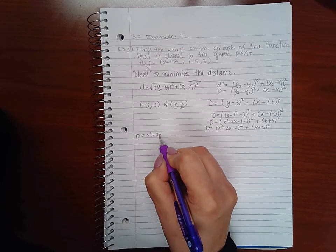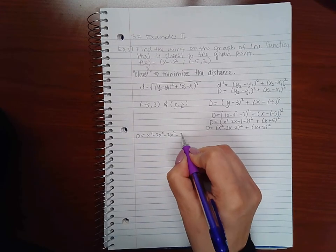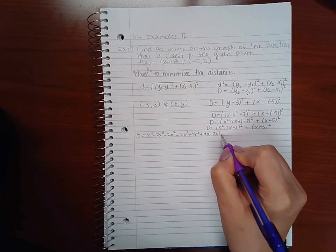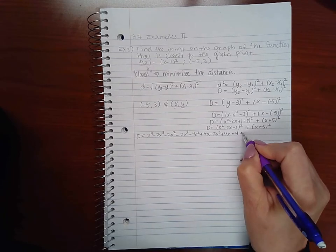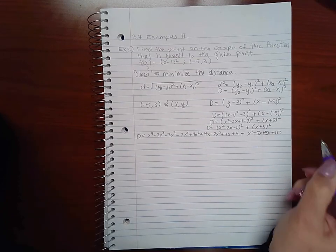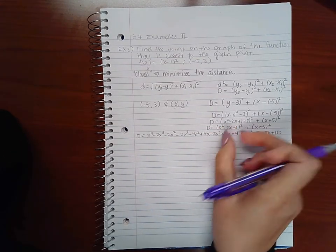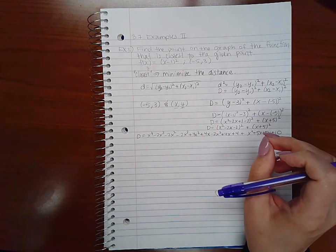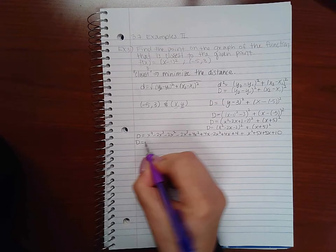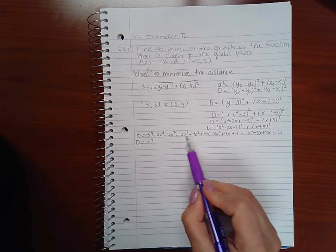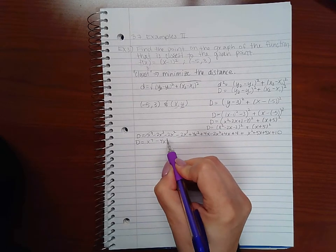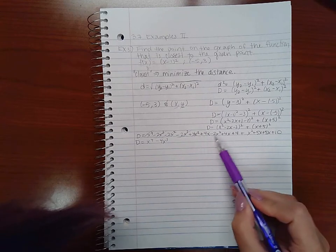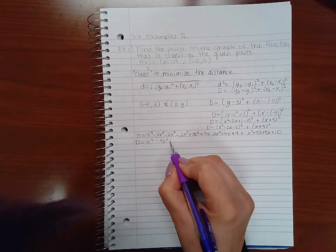If I take this times itself, I'll end up with x to the fourth minus 2x cubed minus 2x squared plus 4x squared plus 4x plus 4x minus 2x squared plus 4x plus 4, plus x squared plus 5x plus 5x plus 25. Essentially there's two of these multiplied together and I'm foiling them all out. What I end up with in the end is x to the fourth and negative 4x to the third. Then I have negative 2x squared plus 4x squared is 2x squared minus 2x squared cancels out, and I have plus this x squared here.